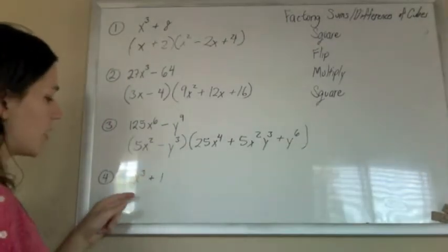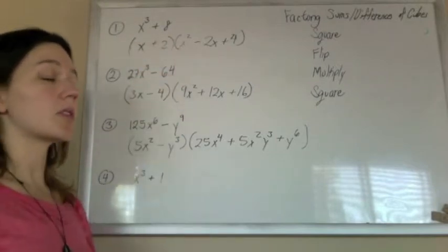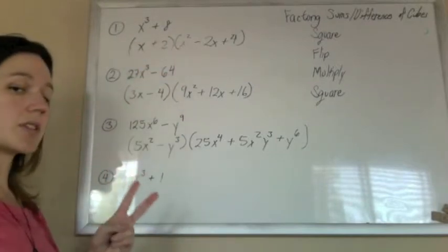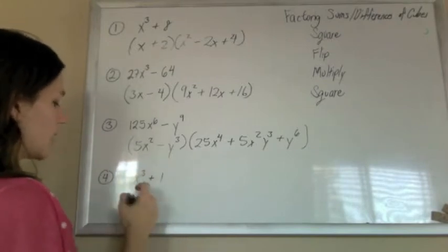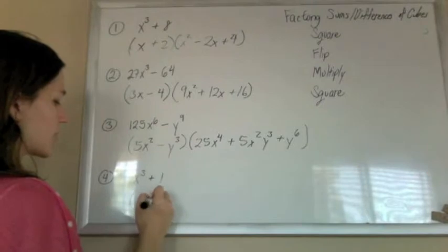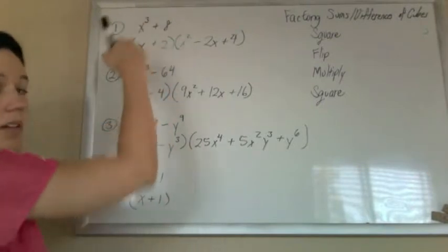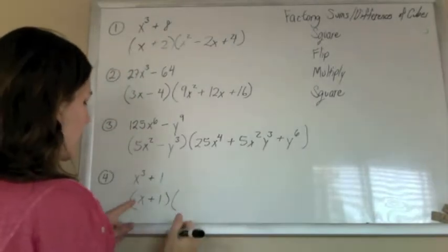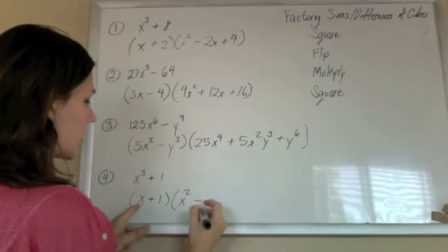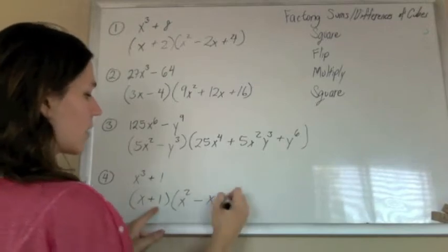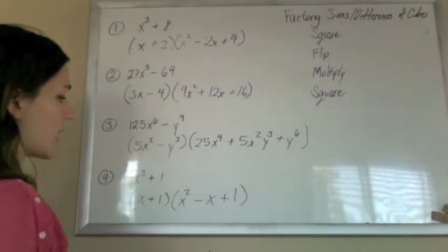So, this last guy here, another sum of cubes. Note, it can be the sum or the difference of cubes. We're not restricted like we are in the difference of squares. You can add or subtract these guys. So, cube root of that is x, cube root of that is 1. Notice the first guy always takes the same sign as the original. And then you're going to square, x squared, flip the sign, multiply them together, square the last.